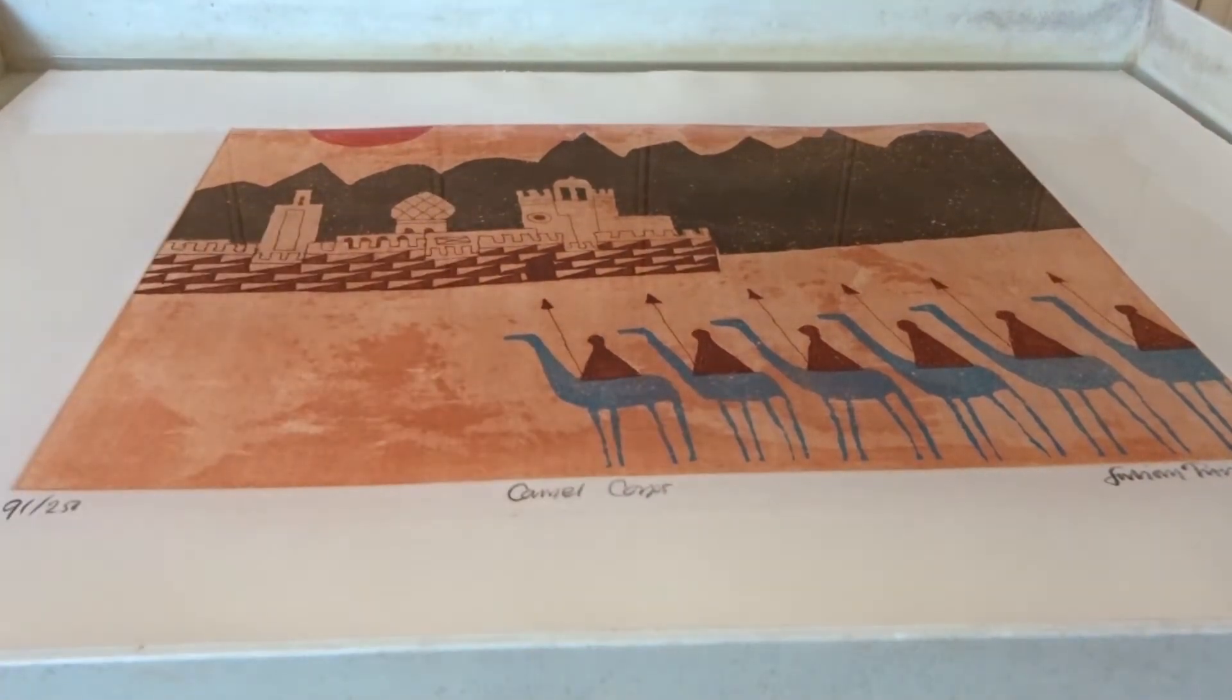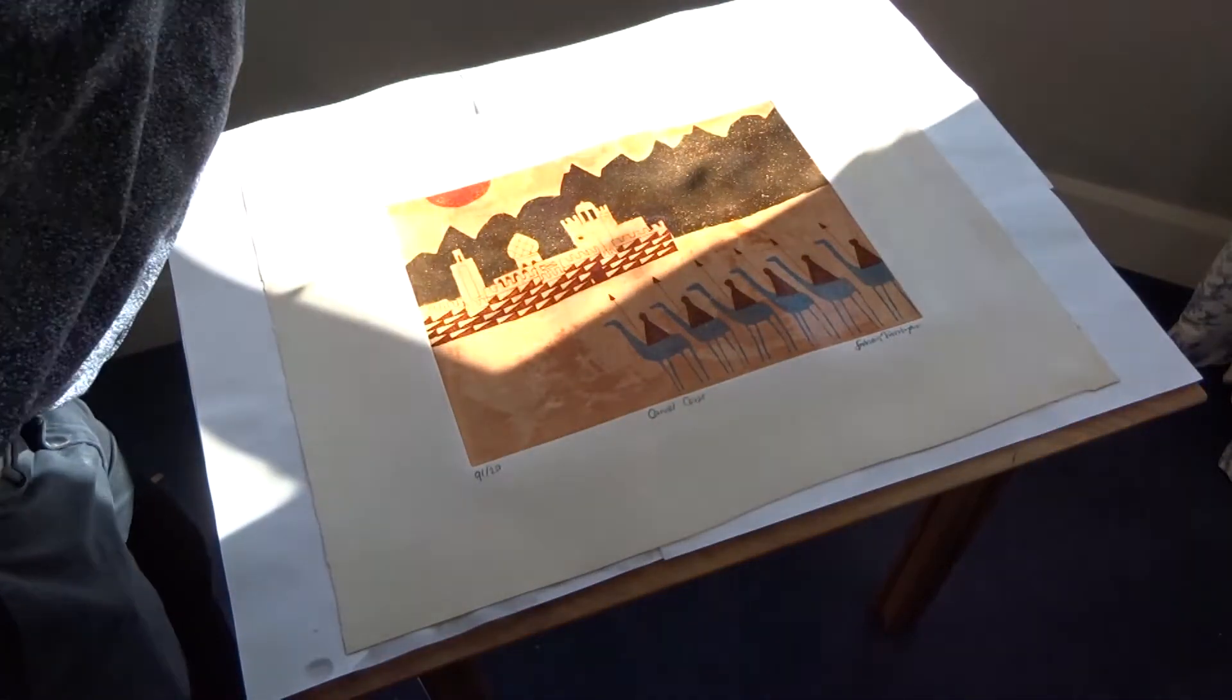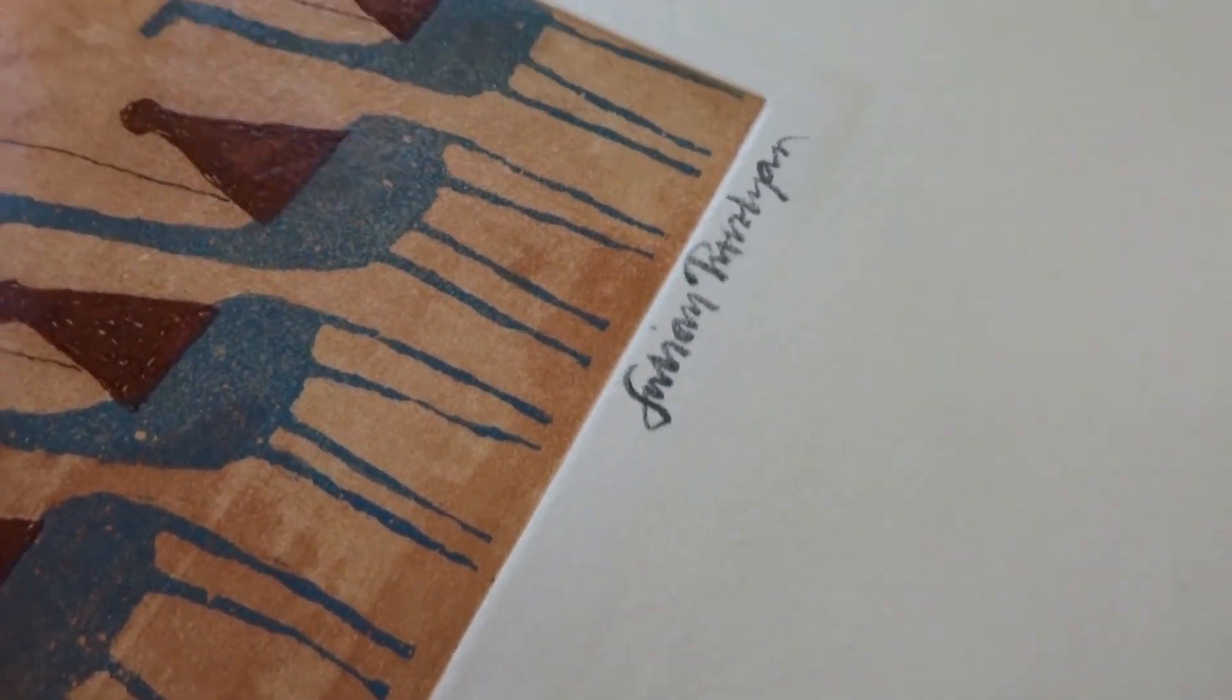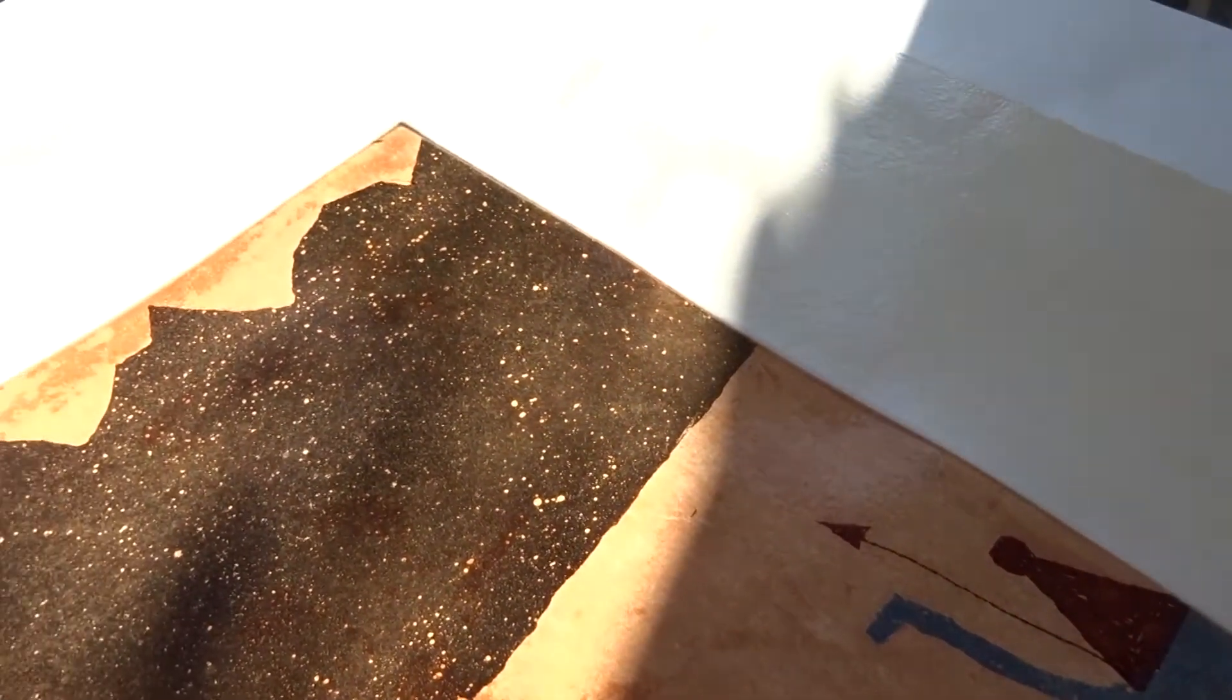The next step is drying the work in direct sunlight so here I have a table set up with clean blotting paper underneath it and the work will then sit there to dry. This is the work being left to dry in the sun.